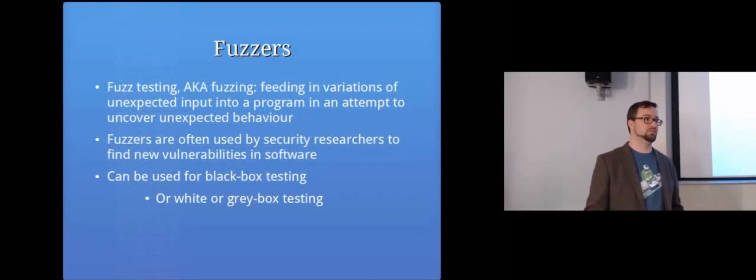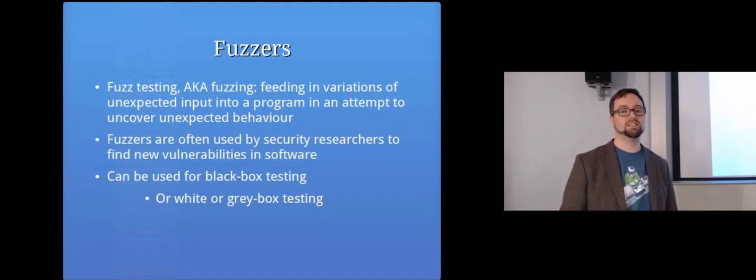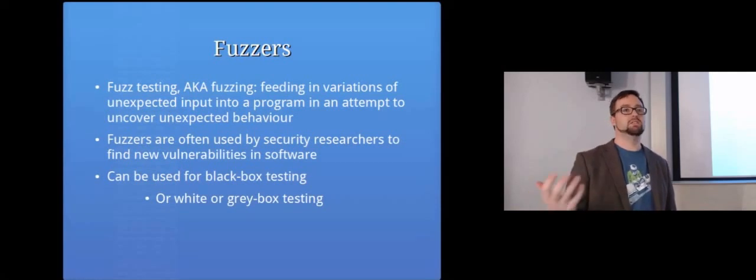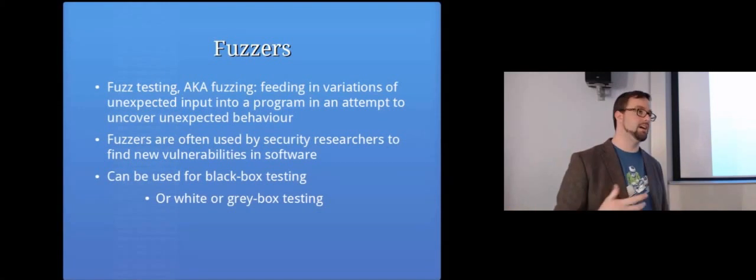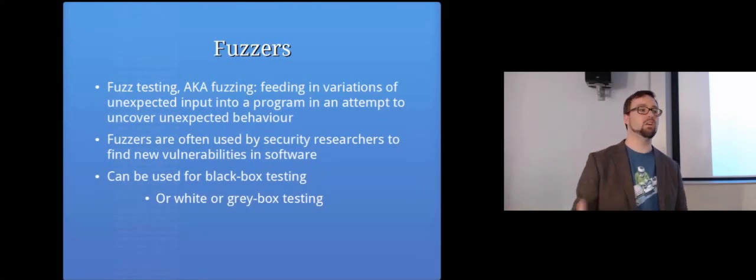What about when you don't have access to the source code? Fuzzing. You can use fuzz testing or fuzzing to basically feed in variations of input into a program. It tries to create unexpected input to try and uncover unexpected behavior, software vulnerabilities that might be lurking in the code.